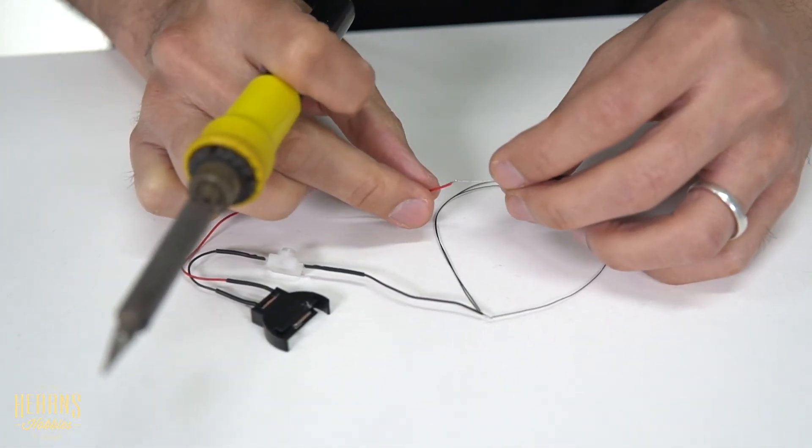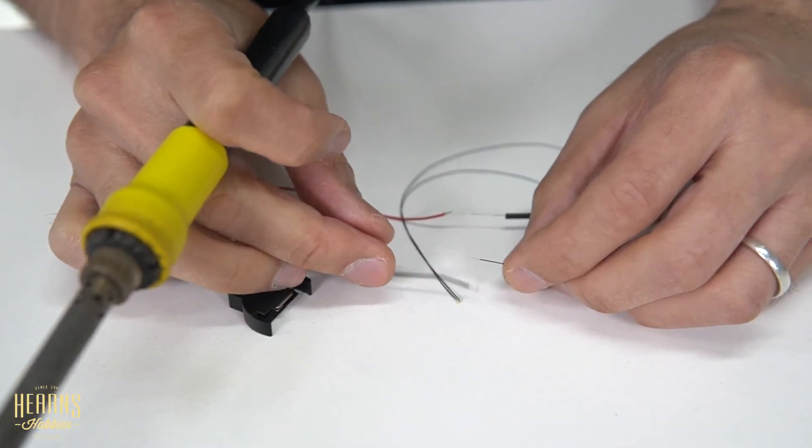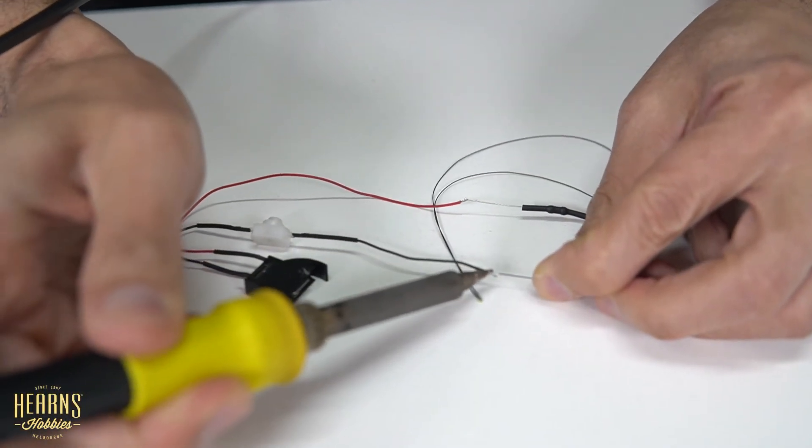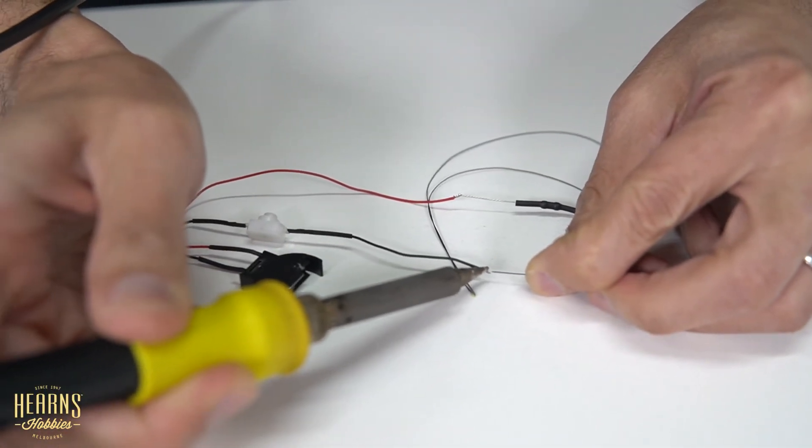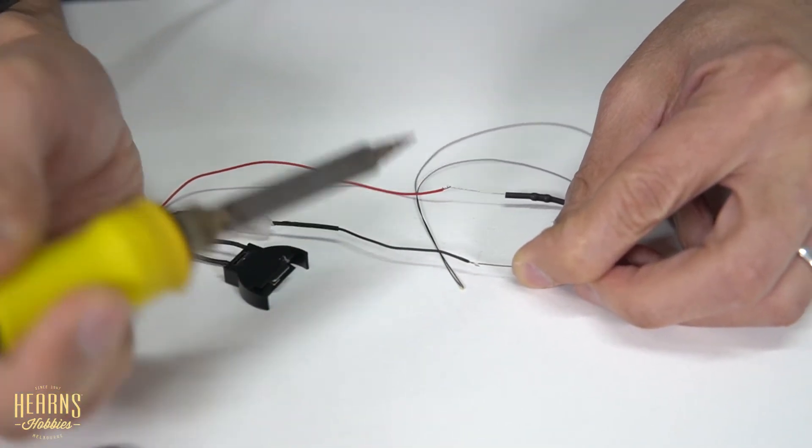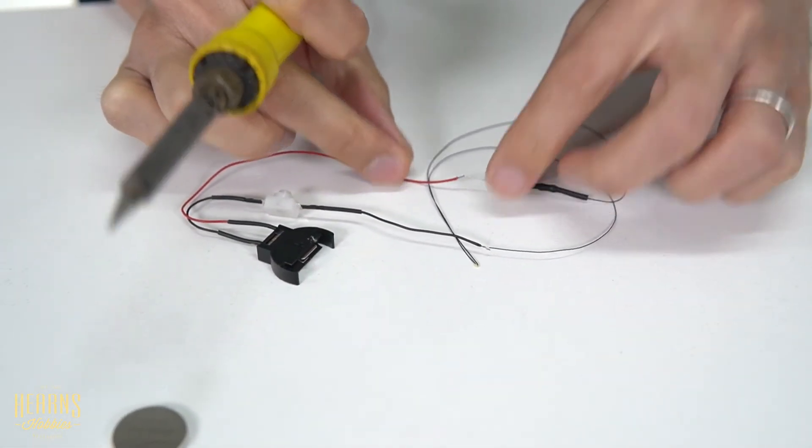We've got the positive joined, we've got the negative joined. Oh, negative's not joined. It always helps to give them a little bit of a tug to make sure you've got a good connection. Sometimes fine wires can be a bit tricky. It's joined up now.